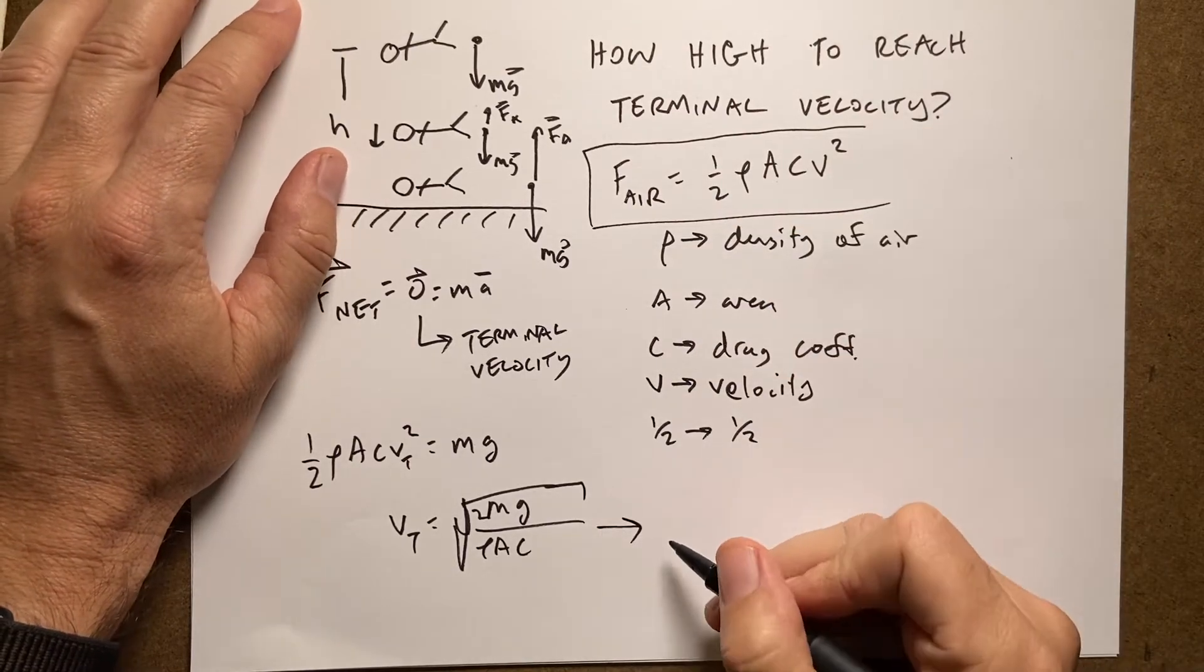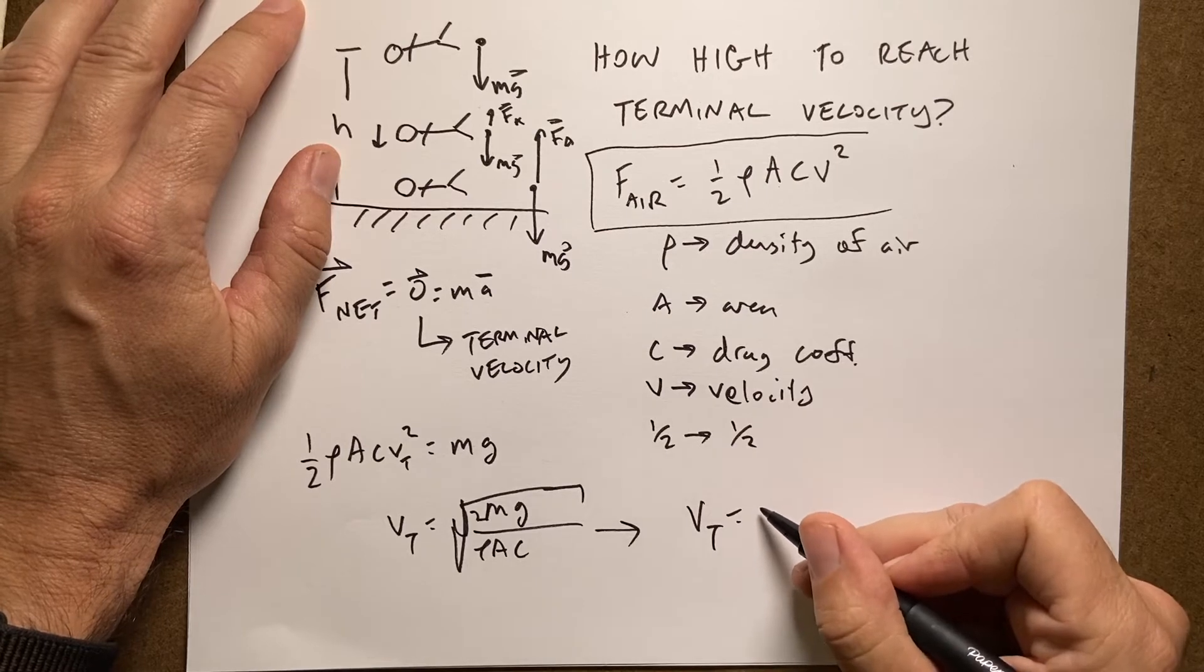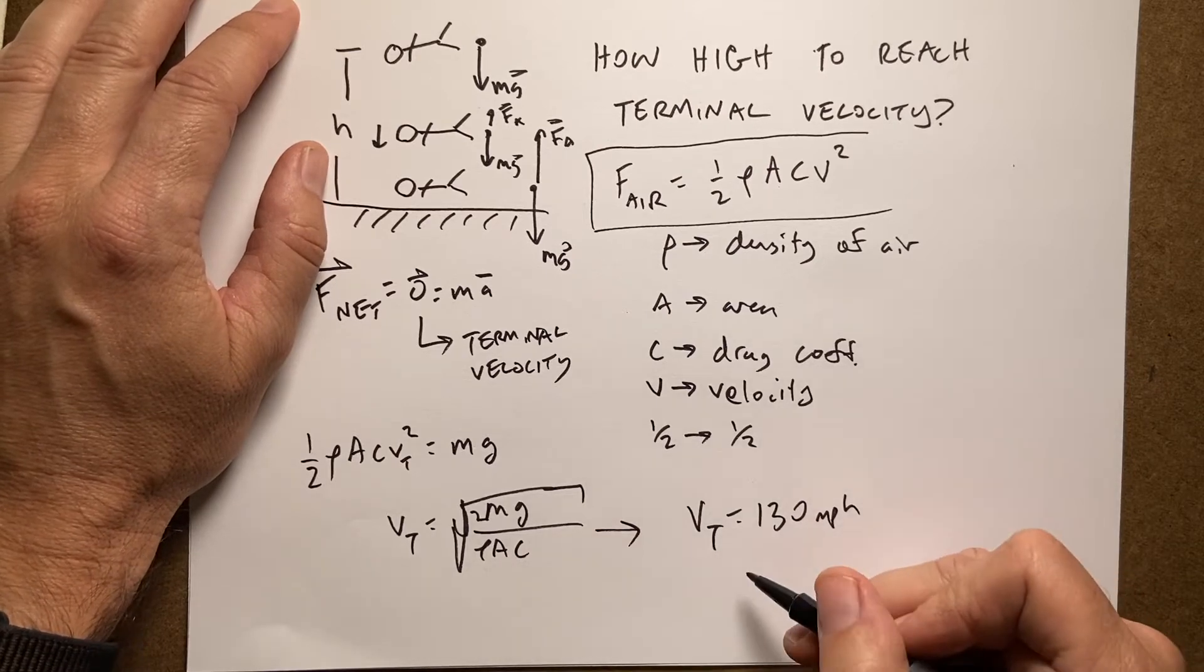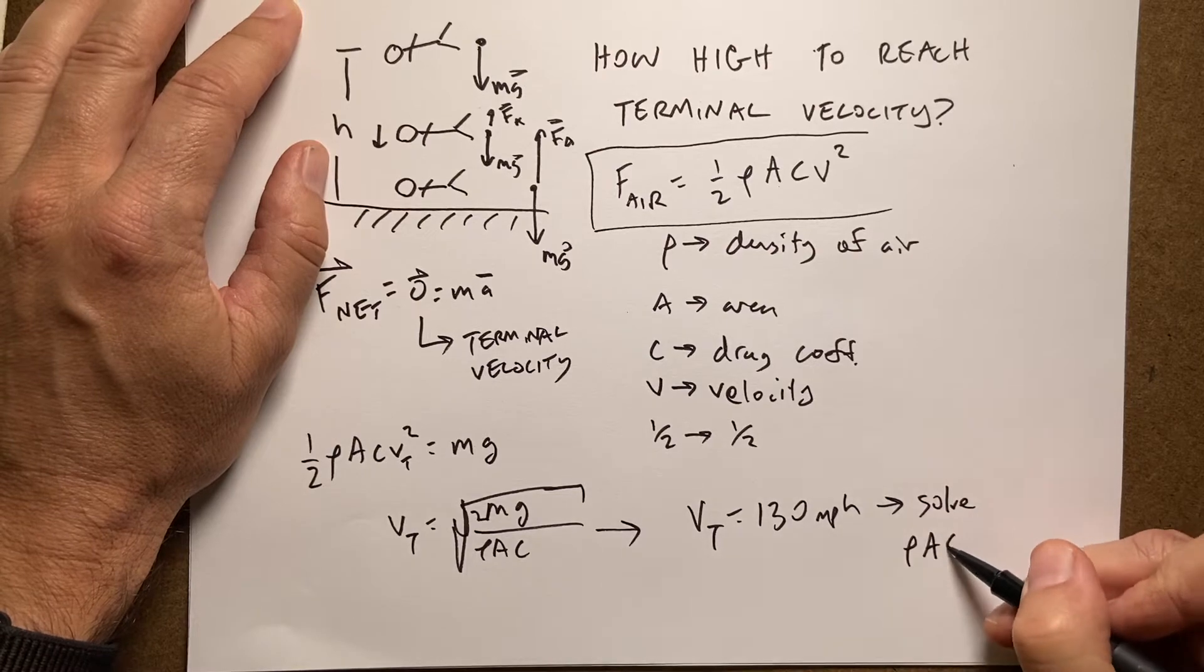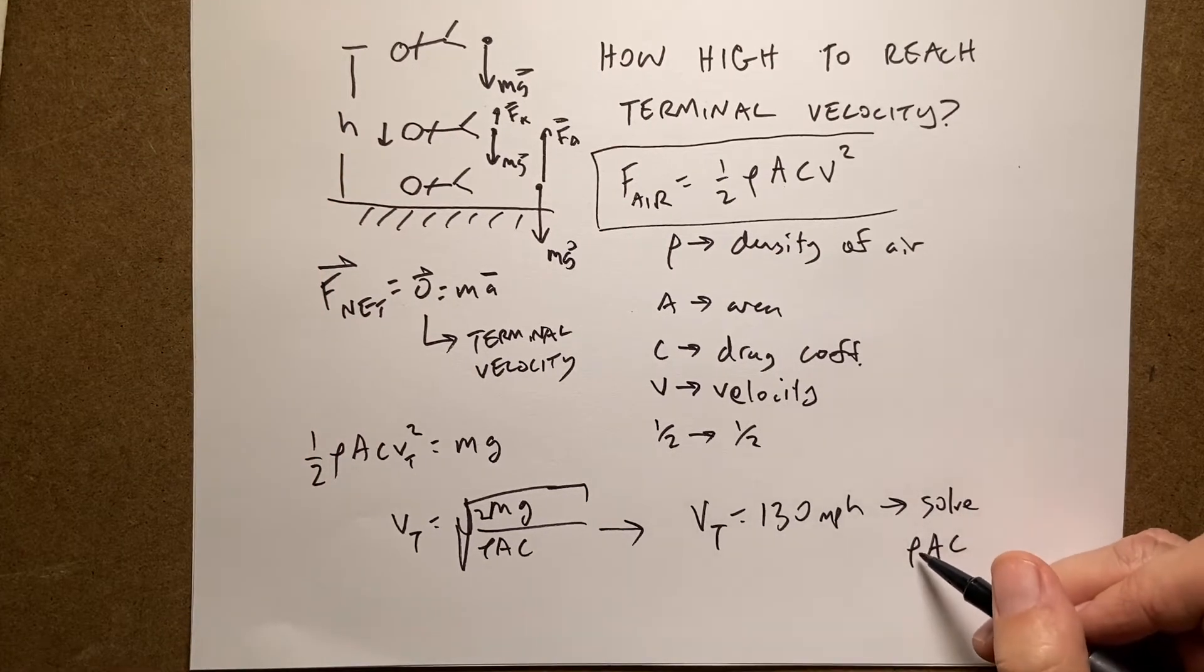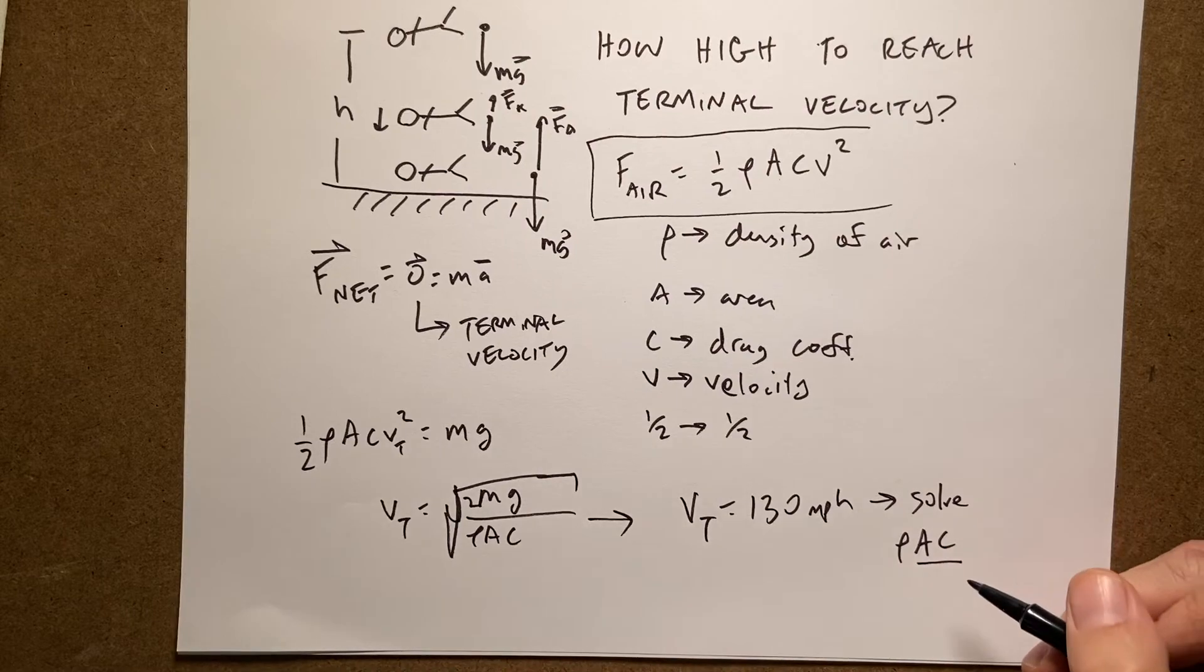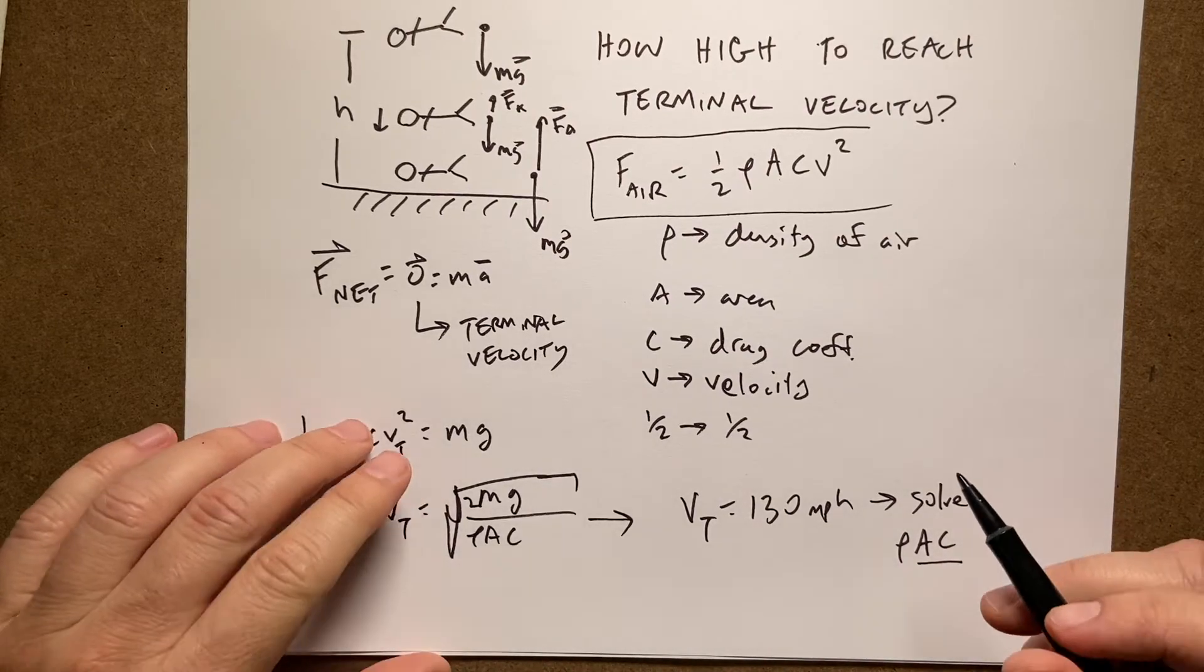So let's look at the example of a skydiver. For a skydiver, I know the terminal velocity is, let's say, I think it's like 130 miles per hour. So from that, I can solve for rho AC. And I can use a typical mass. So I don't really care. I know the density of air is 1.2 kg per cubic meter. I can just solve for this AC. I don't really care what they are. I just know it's a constant.